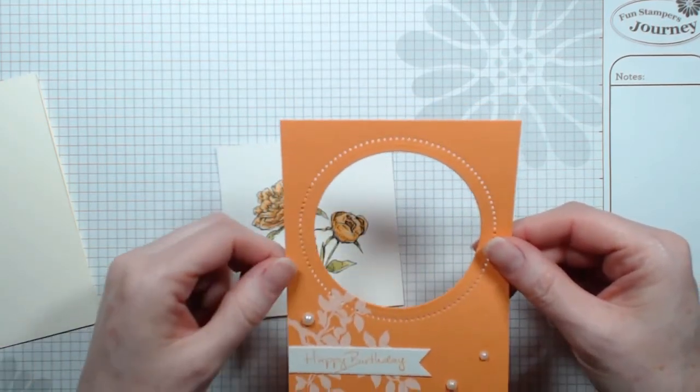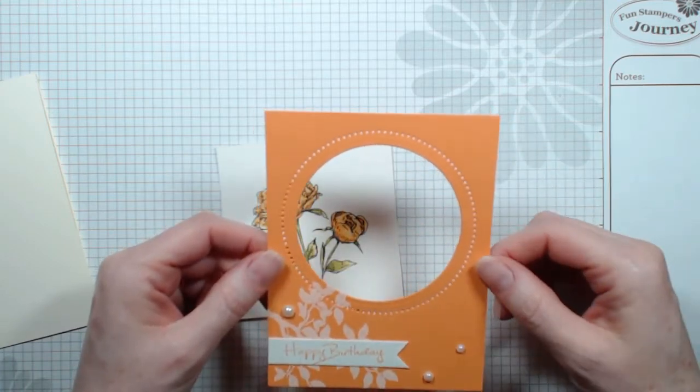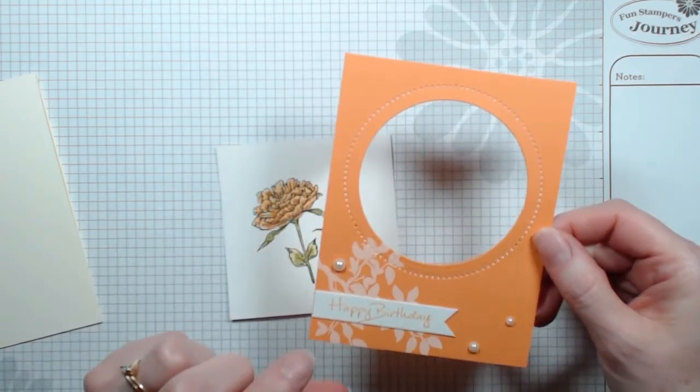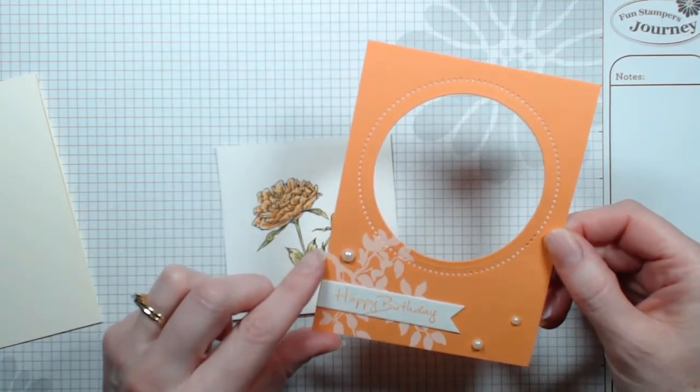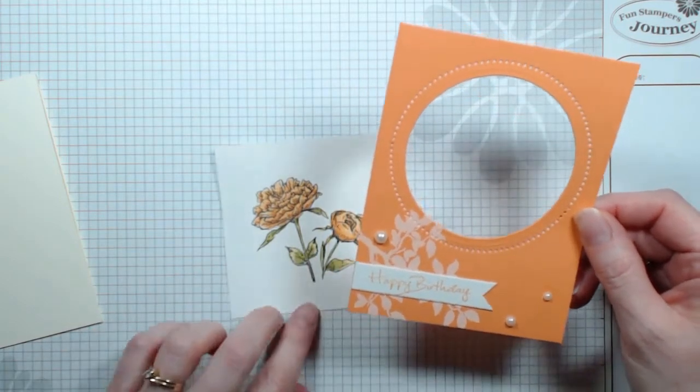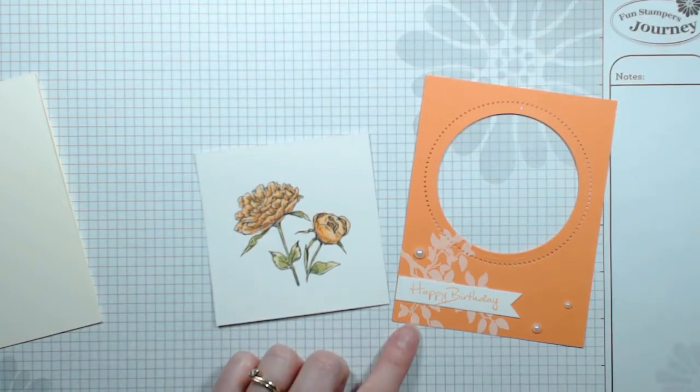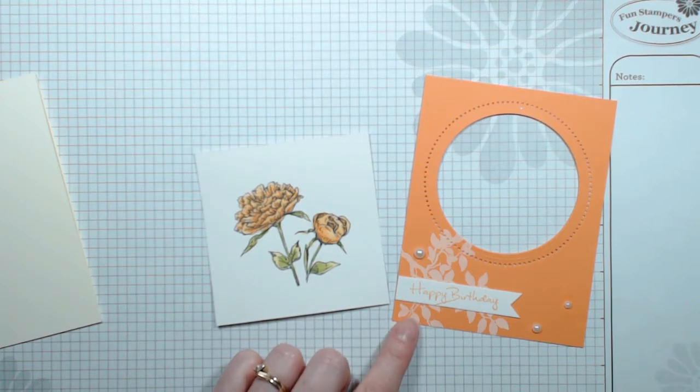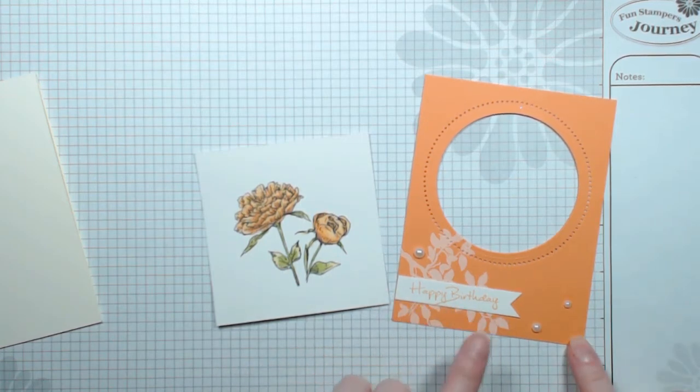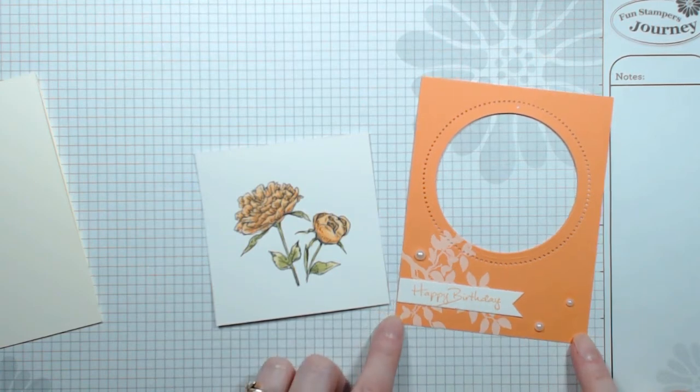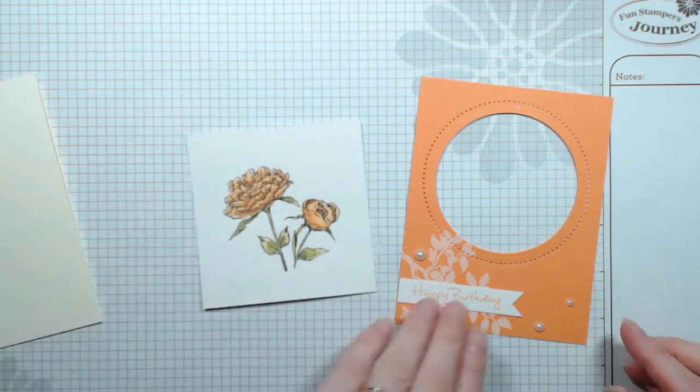I also stamped this leaf branch using buttercream—love the look of that. The name of that set is Branch, it's an ATS. As you can see I did a little banner, stamped happy birthday, and put some pearls on.